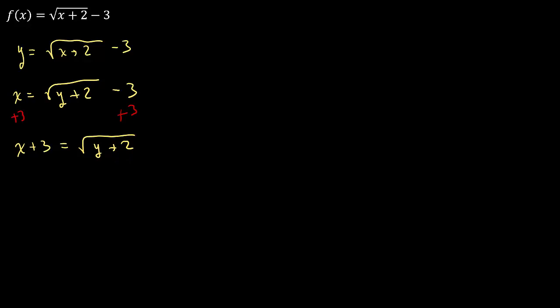And then we need to do what? Well, I've got to get rid of that square root, so we're going to need to square both sides. And so that's going to be x plus 3 squared equals y plus 2.